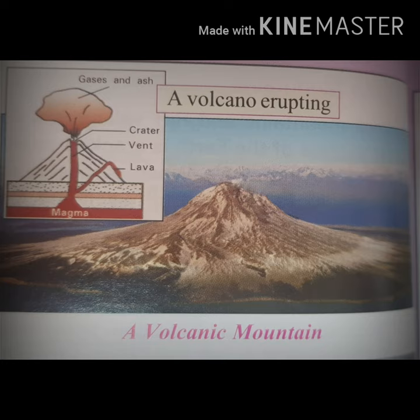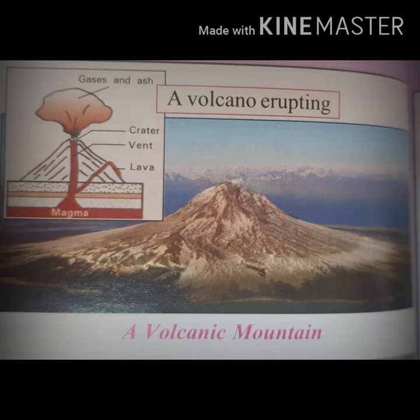Next is volcanic mountains. When a volcano has erupted many times, it may build up a tall cone-shaped mountain. It may be noted that not all volcanoes form tall mountains. Examples include Fujiyama in Japan, Mount Egmont in New Zealand, and Mount Kilimanjaro in Africa. These mountains are also known as mountains of accumulation because they have been formed by the deposition of lava. At the time of a volcanic eruption, lava is thrown out and deposited around the crater to form a mountain.